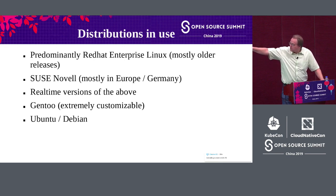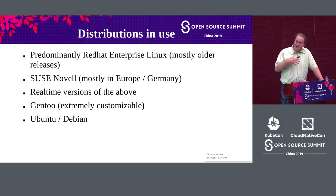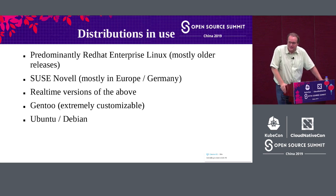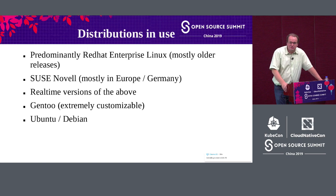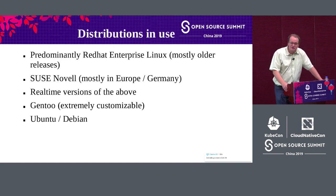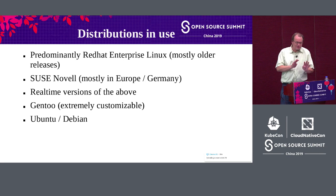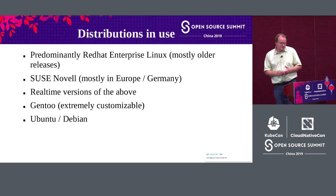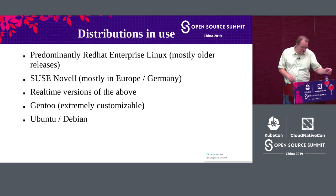Ubuntu and Debian are also used to avoid dependence on commercial entities like Red Hat and SUSE, where you are subject to the whims of a large company. With Ubuntu and Debian, there is wider availability of all source code and direct influence over releases. Debian in particular is prevalent in embedded systems, where you can build a very small system dedicated to a specific function.